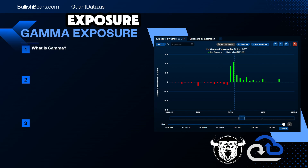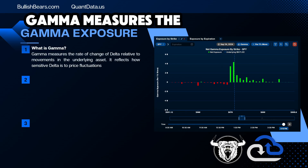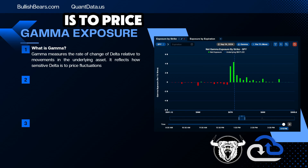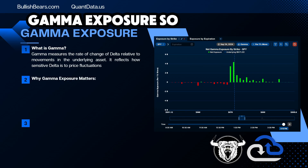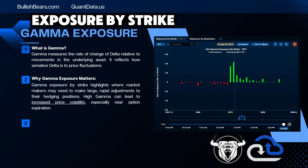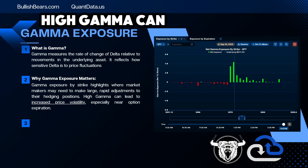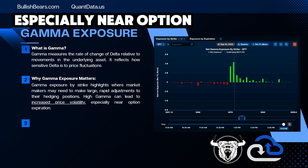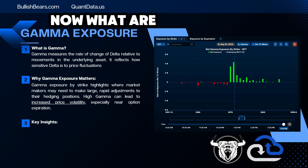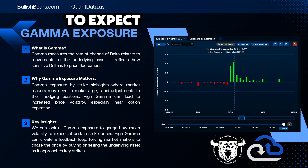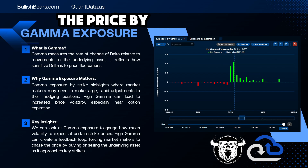Now what's gamma exposure? Gamma measures the rate of change of delta relative to the movement in the underlying asset, and it reflects how sensitive delta is to price fluctuations. Gamma exposure by strike highlights where market makers may need to make large, rapid adjustments to their hedging positions. High gamma can lead to increased price volatility, especially near option expiration. We can look at gamma exposure to gauge how much volatility to expect at certain strike prices. High gamma can create a feedback loop, forcing market makers to chase the price by buying or selling the underlying asset as it approaches those key strikes.